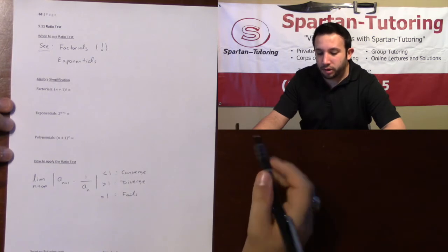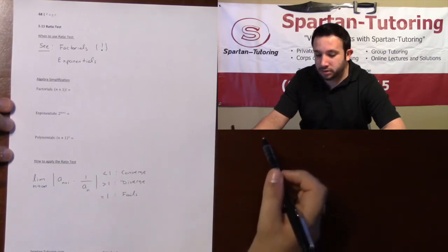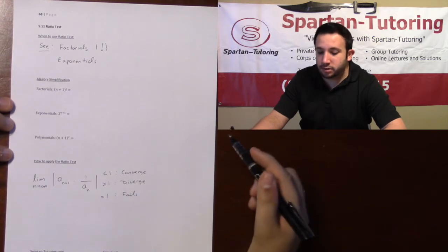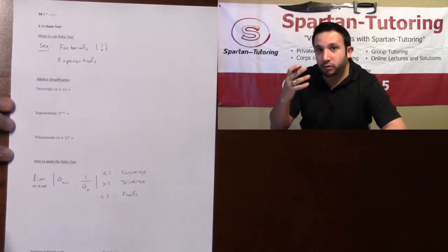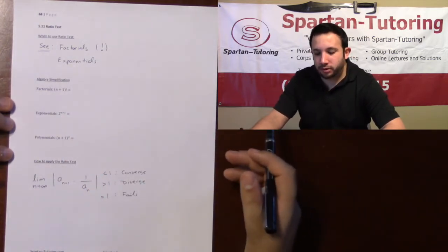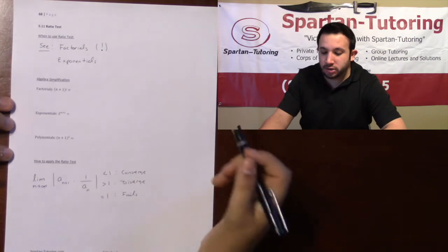Howdy, in this video we're going to talk about the ratio test. I like to use the ratio test whenever you see factorials—that's the really big one—and then exponentials kind of give it away as well. You can use the ratio test then, but the big one's definitely going to be factorials.